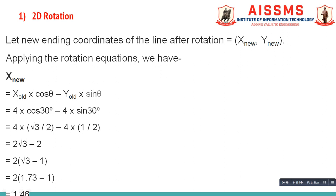And we assume ending coordinates of line after rotation as X_new, Y_new. And here we apply rotation equations to calculate X_new. X_new is equal to X_old times cos theta minus Y_old times sin theta. Value of X_old is already given to us in our problem statement which is equal to 4. Also rotation angle theta is given to us in our problem statement which is equal to 30. So we just substitute these values in our equation.